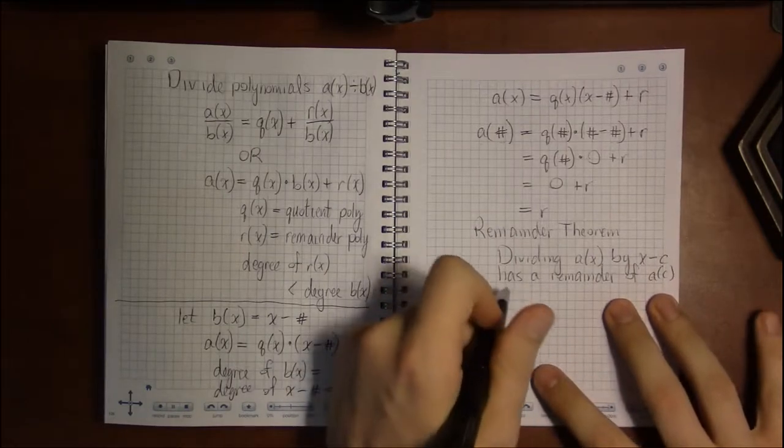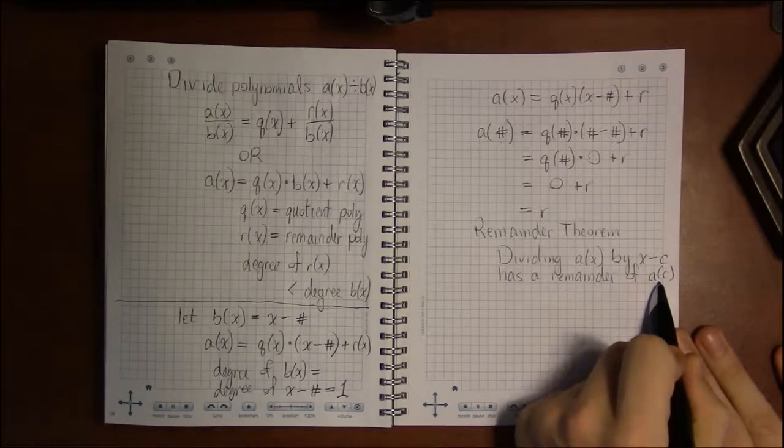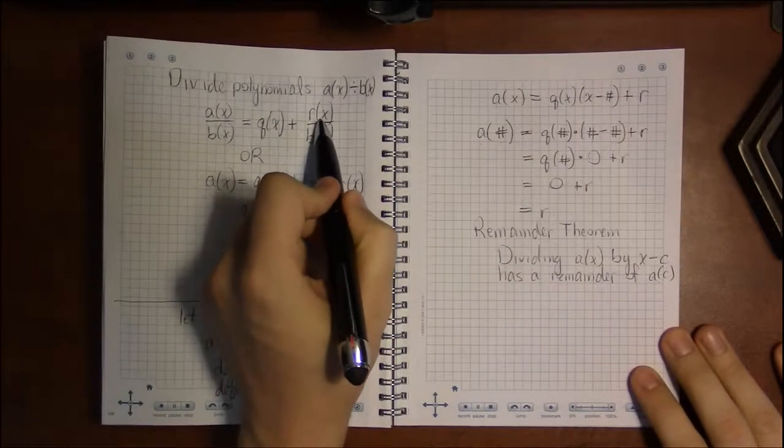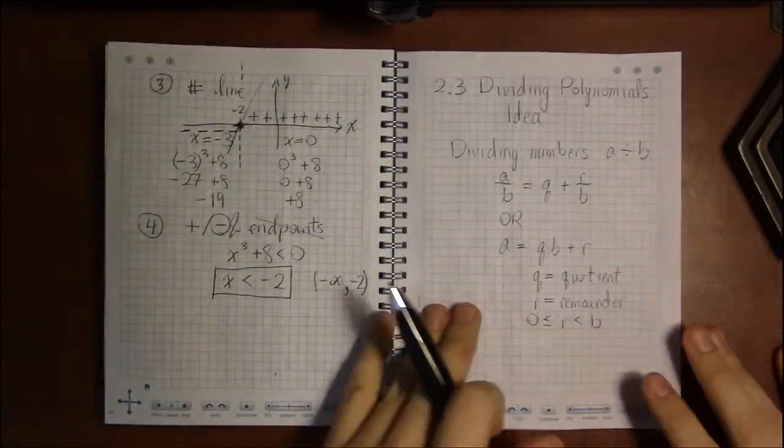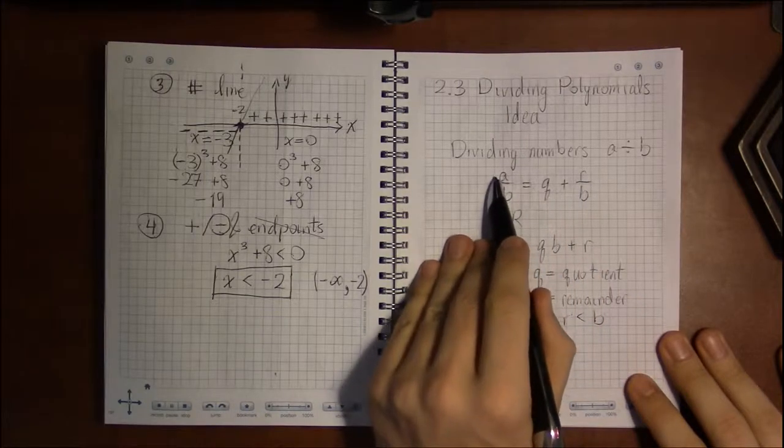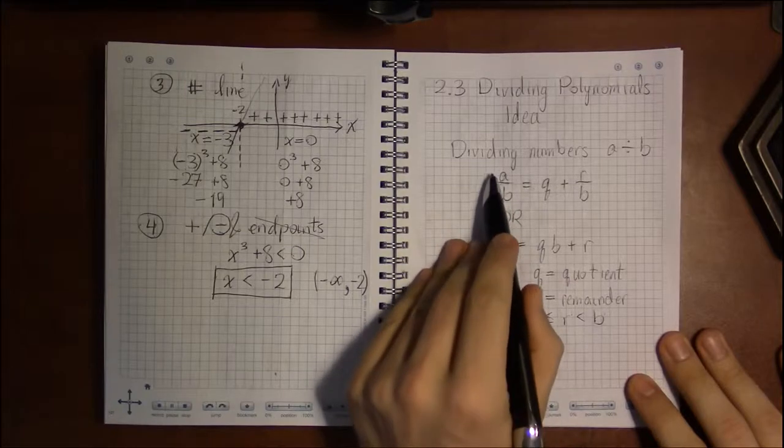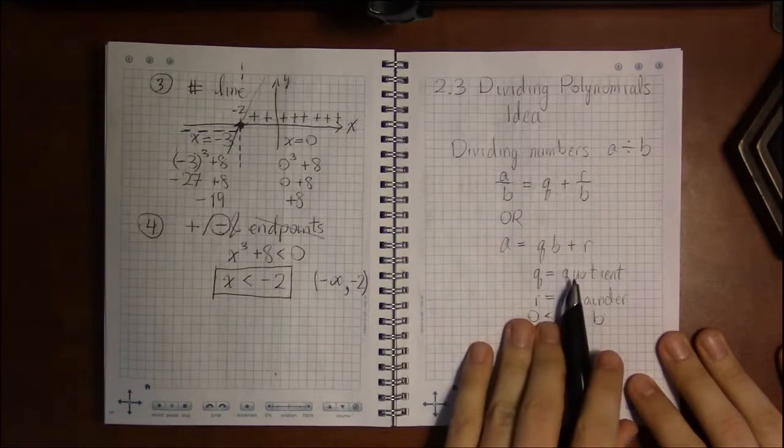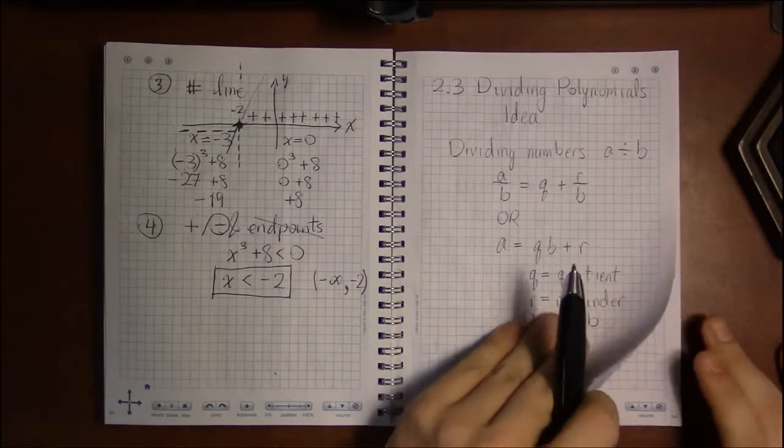And one particular instance is, what happens when this remainder is zero? When you have a zero remainder, remember back when we were dividing numbers. When the remainder is zero, we say that B divides A. B goes into A nicely. That B is a factor of A.